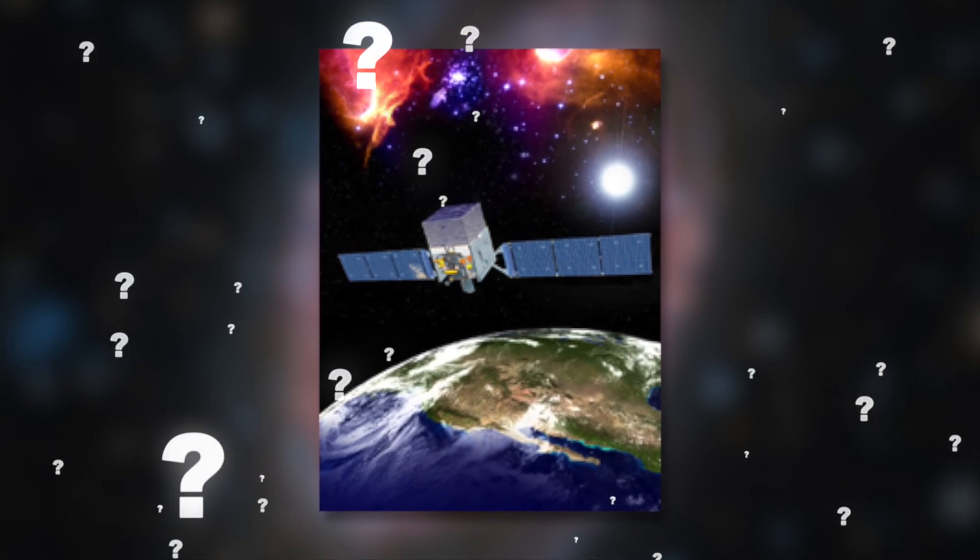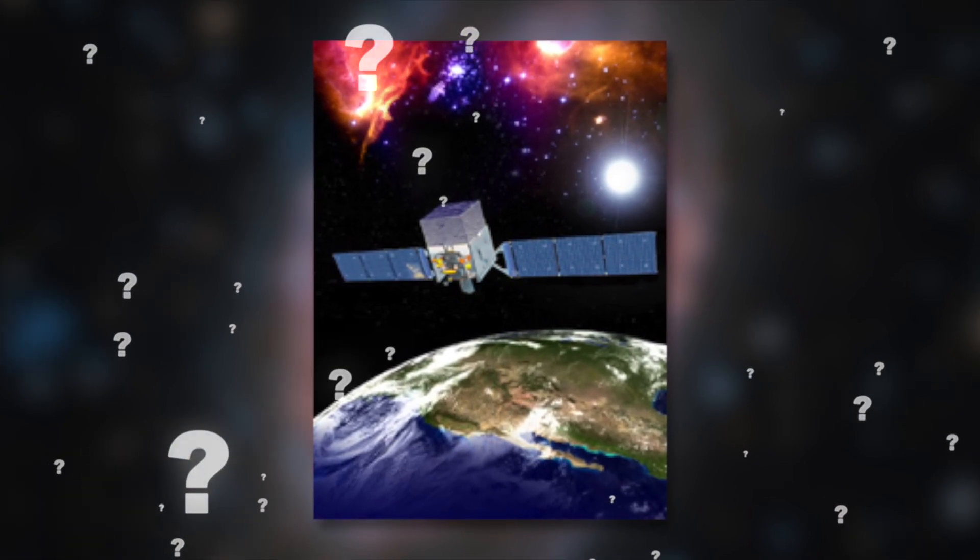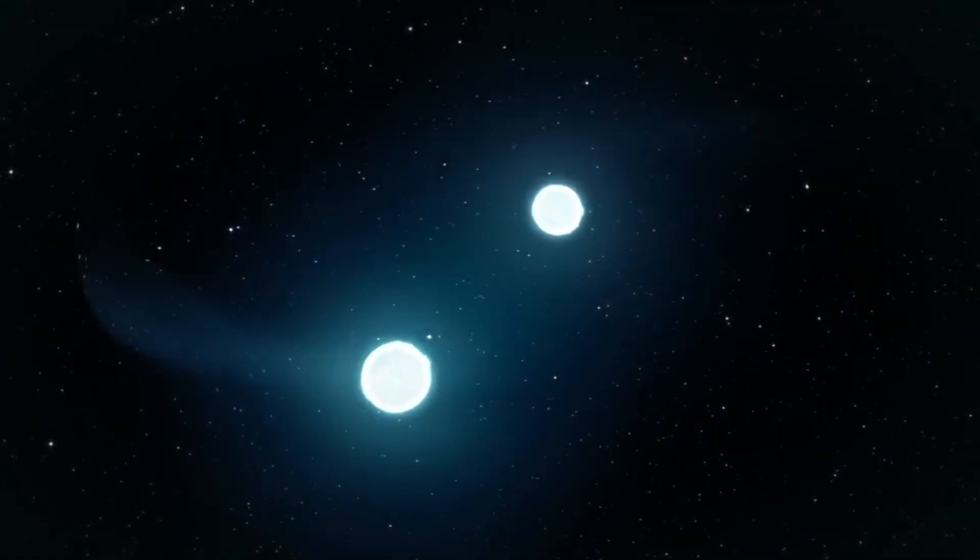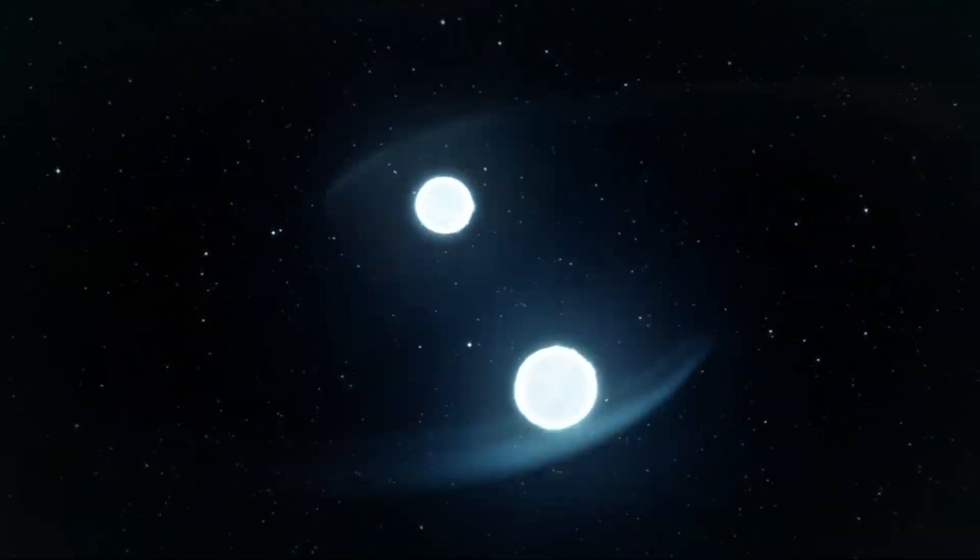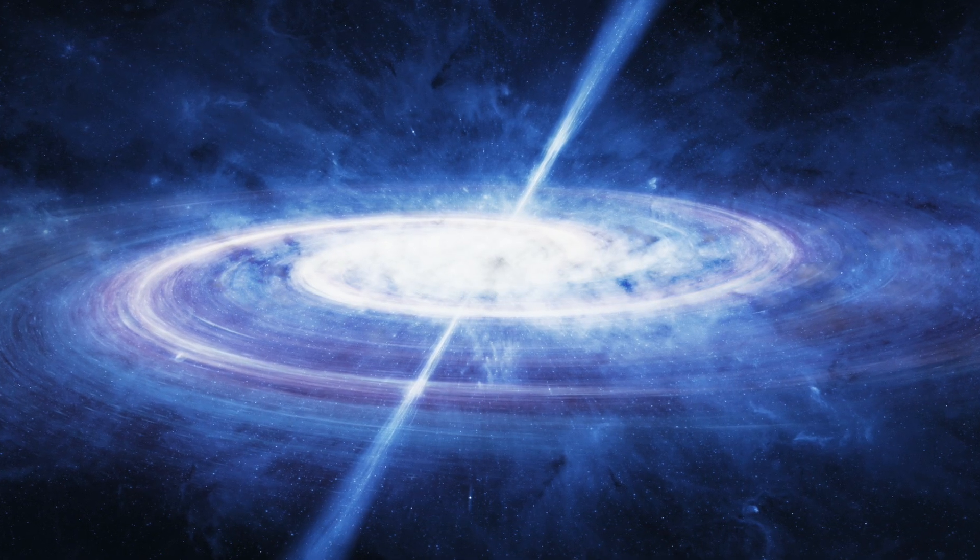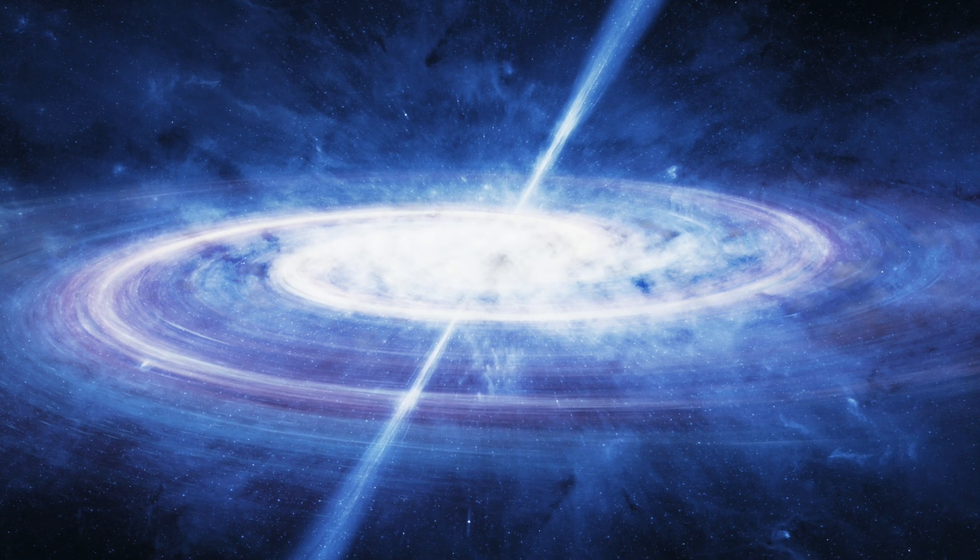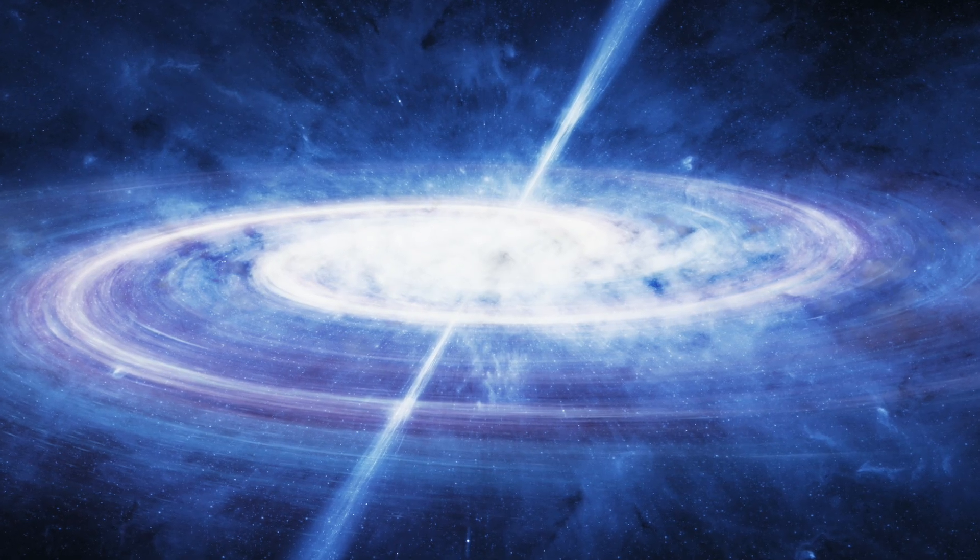Where does it come from? There are two possibilities for what could be causing this surplus: a population of high-energy, rapidly rotating neutron stars known as pulsars, or a concentrated cloud of dark matter that collides with itself and produces an excess of gamma rays.